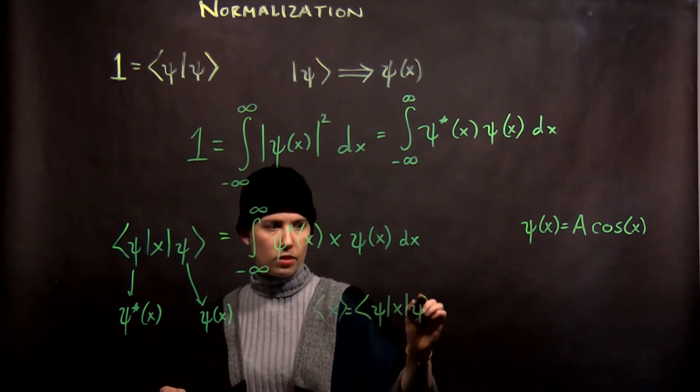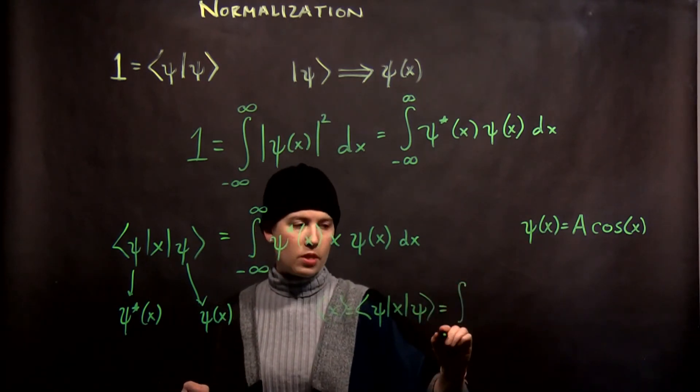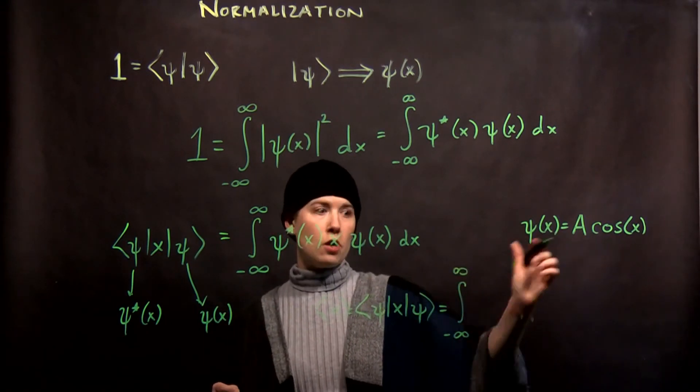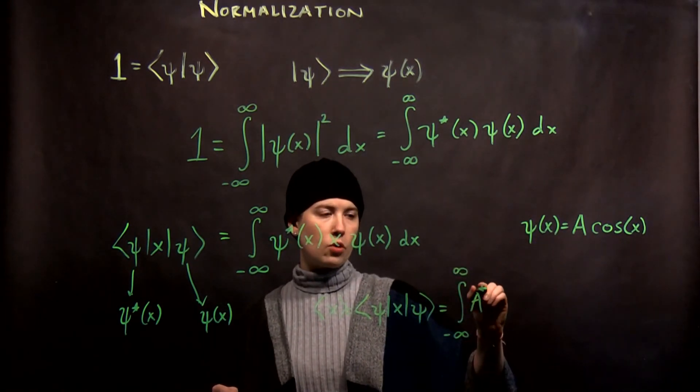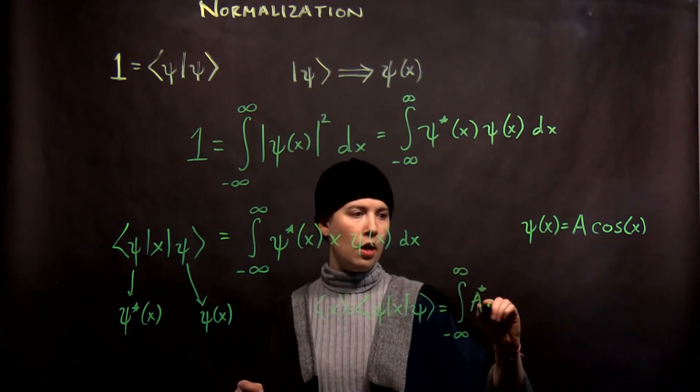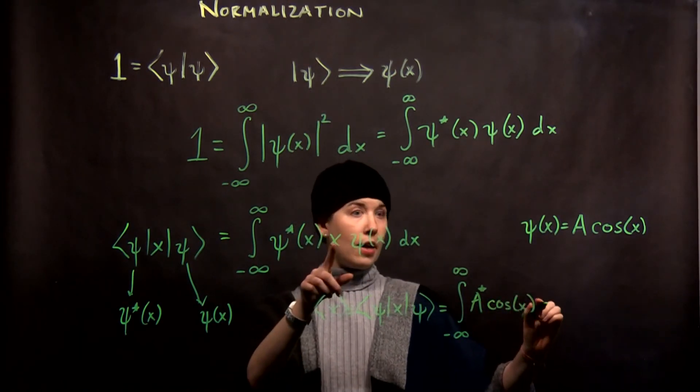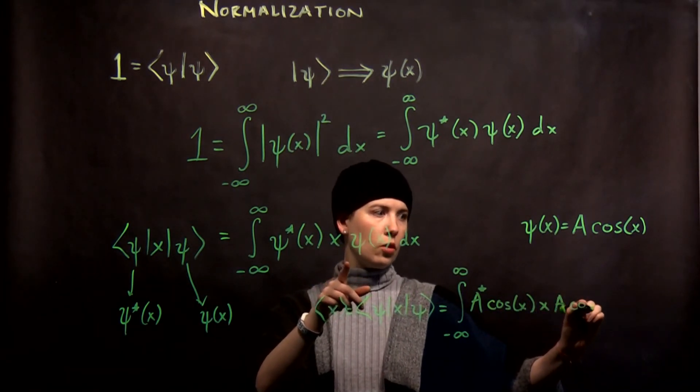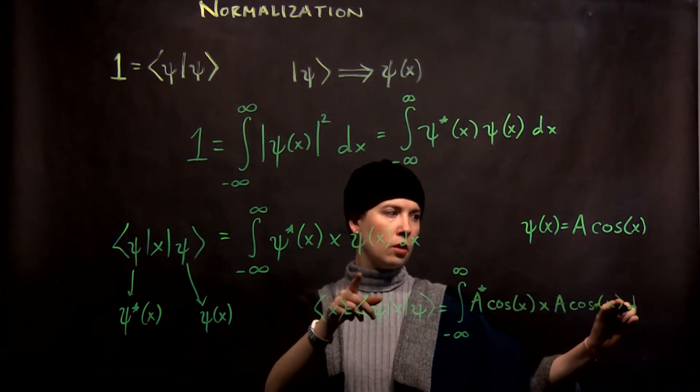Then if I wanted to say what is the expectation value, right? This is me writing expectation value of x. That would be the integral of negative infinity to infinity, ψ*. So we need to complex conjugate a, which is that normalization condition. And then I have cosine of x. Then I have x, that variable itself. And then I have a cosine x dx.